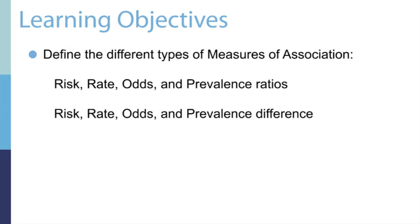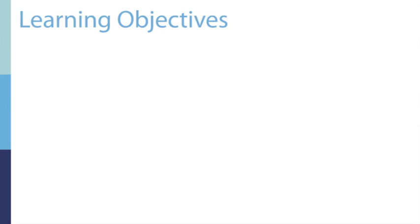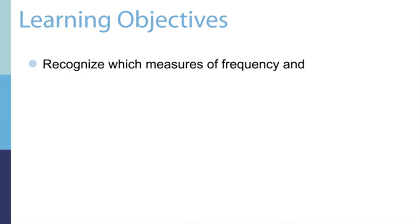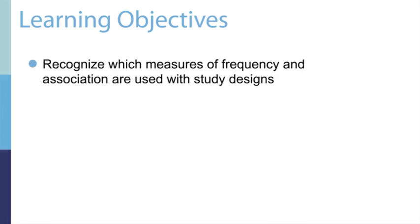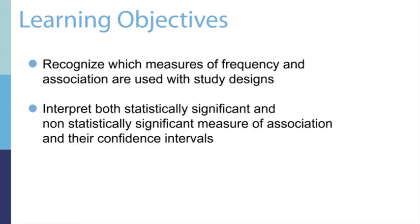You should also be able to define risk difference, rate differences, odds differences, and prevalence differences. In addition, you should be able to recognize which measures of disease occurrence and association are often used with various study designs, and interpret both statistically significant and non-statistically significant measures of association and their related confidence intervals.